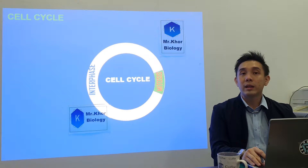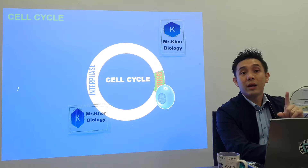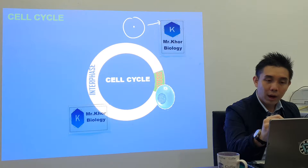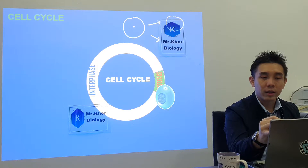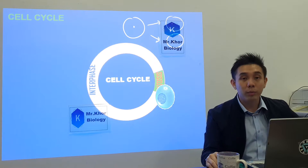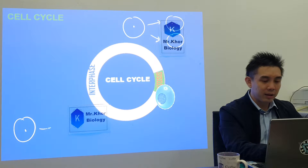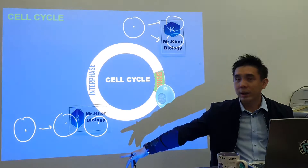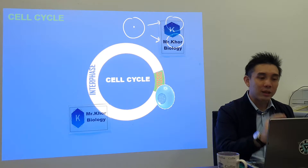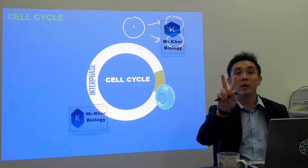Definition of cell cycle — 'takrif kitar sel'. This topic is about cell division: one cell divides to form two new cells.